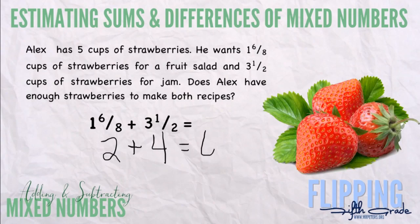Two plus four is six and he has five cups. So in our estimation, remember we're estimating here. We're not giving the concrete answer, we're estimating. In our best estimate, we're saying he doesn't have enough.